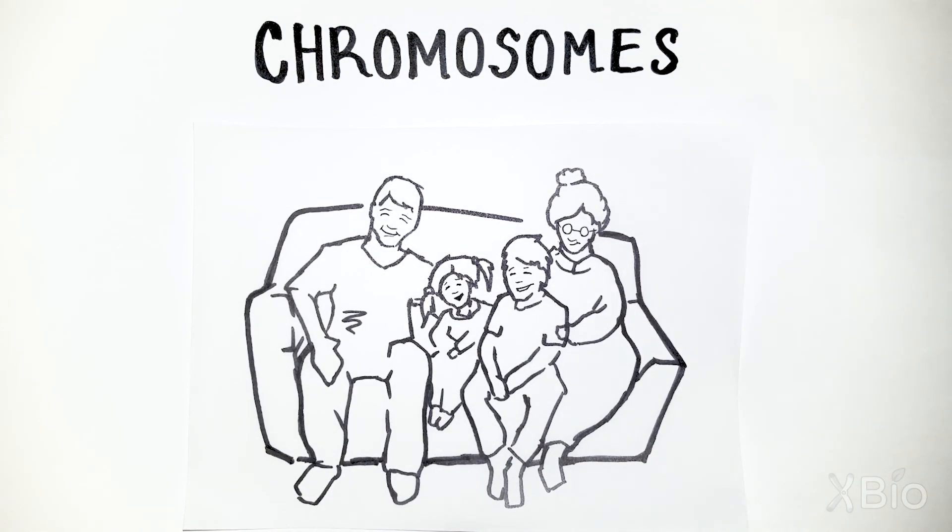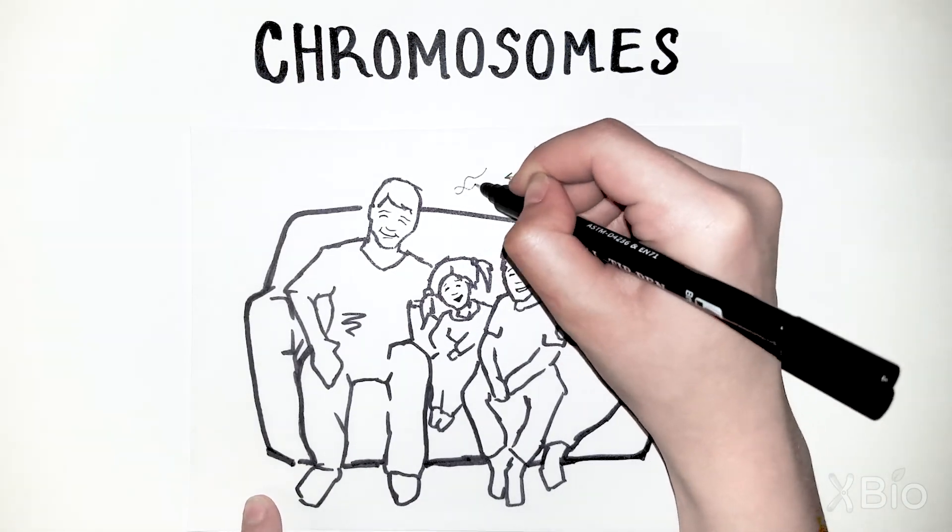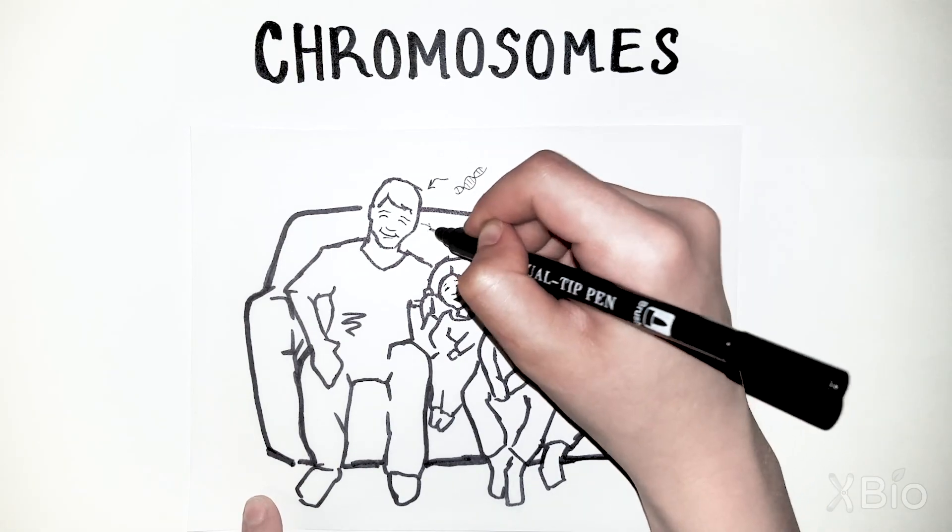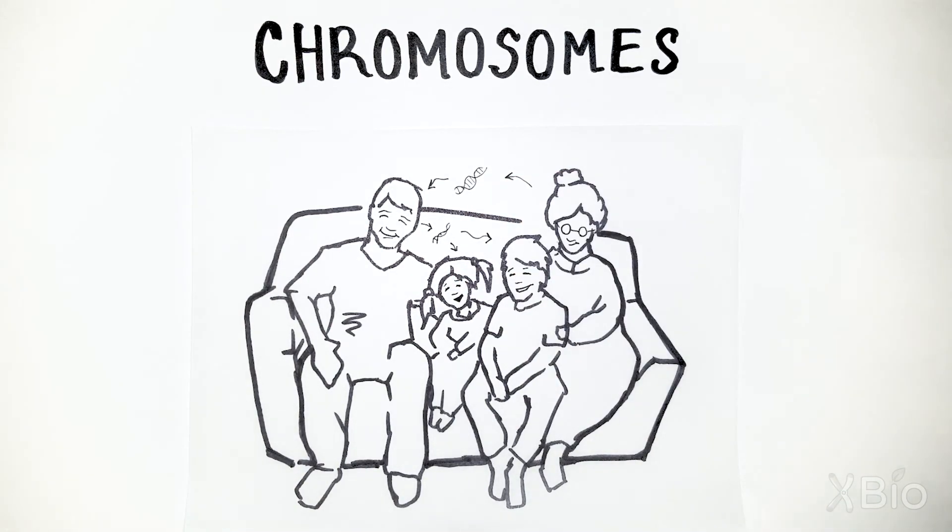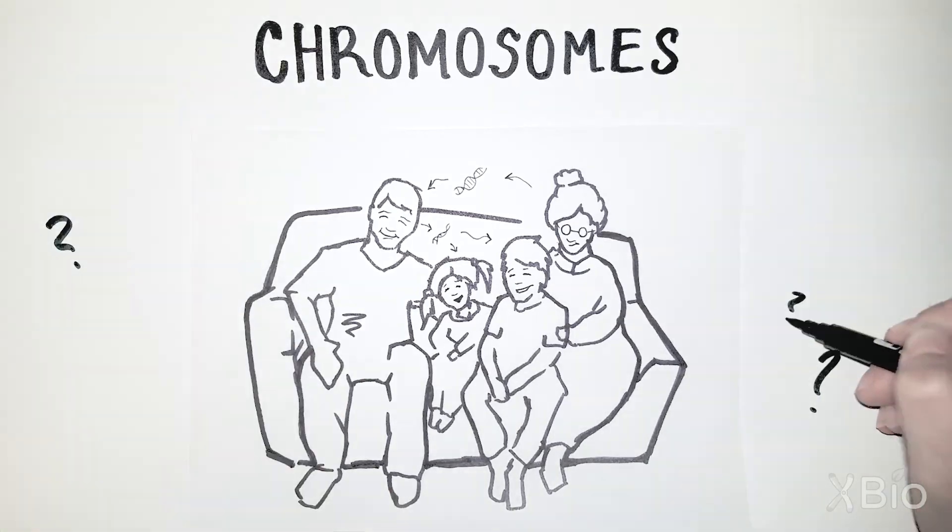DNA is the genetic material in every cell that is passed from generation to generation. Each cell has a lot of DNA, and it needs to be organized to make it easy to inherit. But how is your DNA organized?